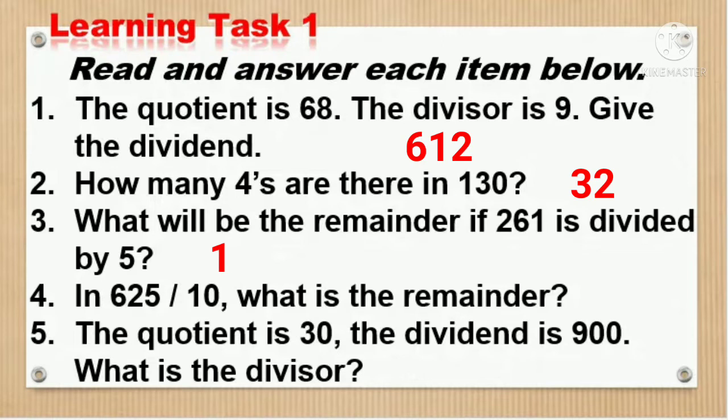In 625 divided by 10, what is the remainder? 625 divided by 10 is 62 remainder 5. So the remainder is 5.